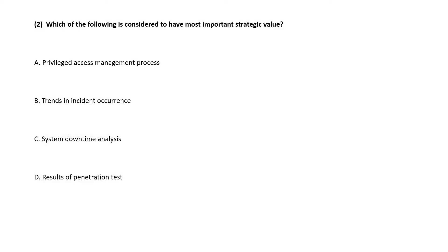Question 2. Which of the following is considered to have most important strategic value? Correct answer is option B — trends in incident occurrence.